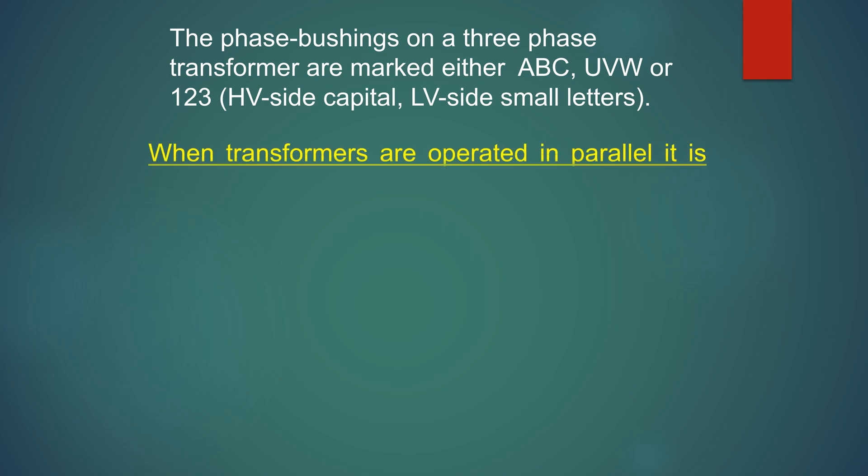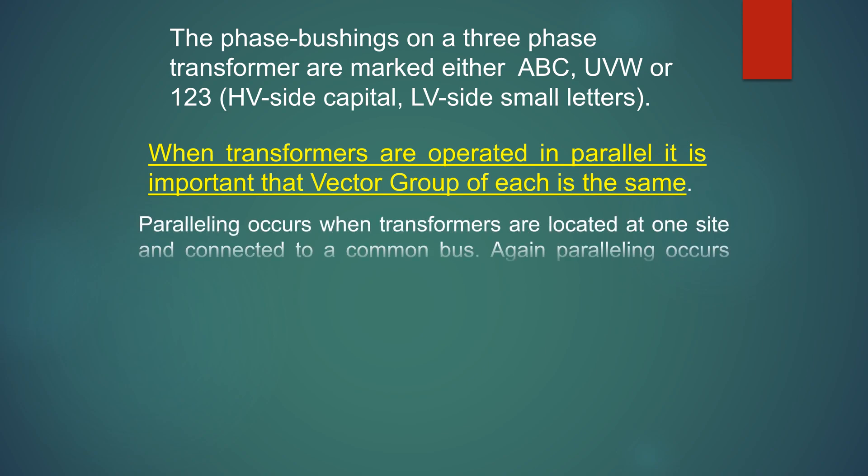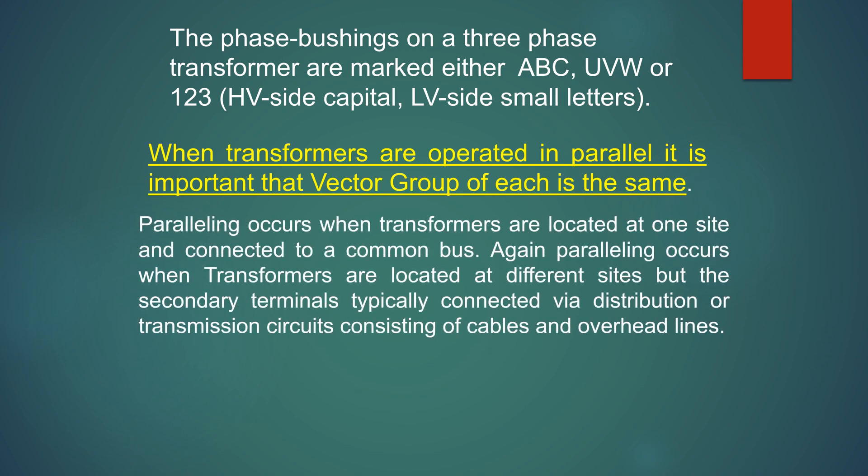When transformers are operated in parallel, it is important that the vector group of each is the same. Paralleling occurs when transformers are located at one site and connected to a common bus, or when transformers are located at different sites but their secondary terminals are connected via distribution or transmission circuits consisting of cables and overhead lines.